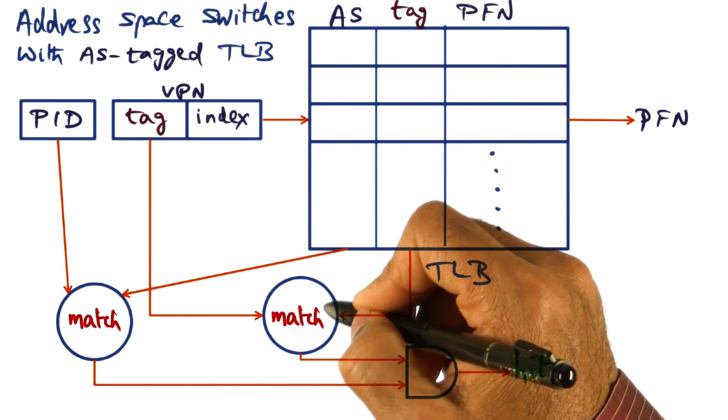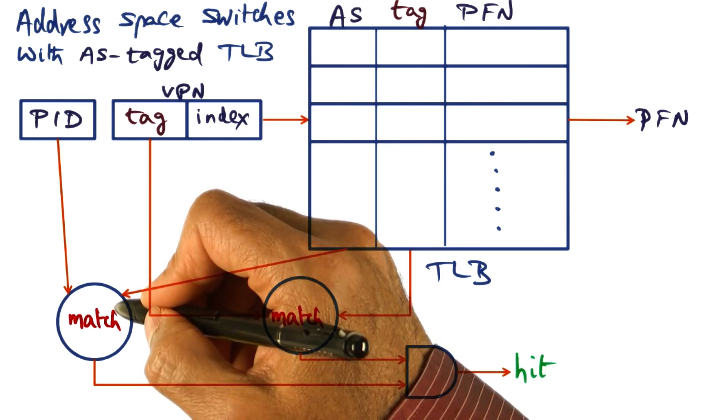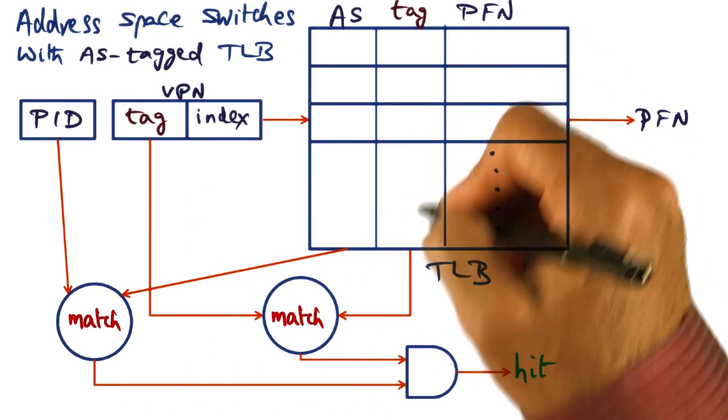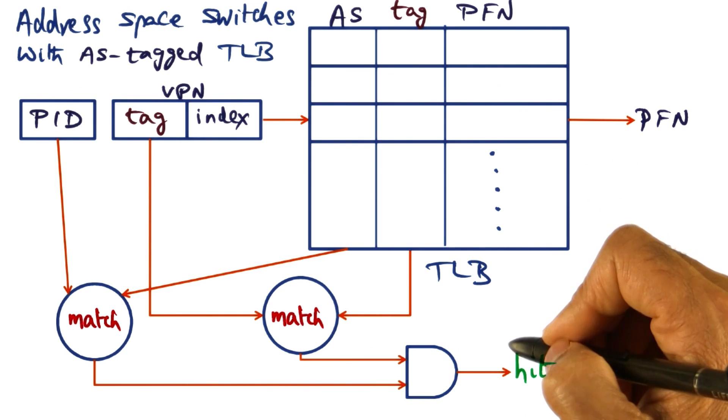There's a second level of matching. Only if both the process ID matches and the tag matches do we have a hit in the TLB.